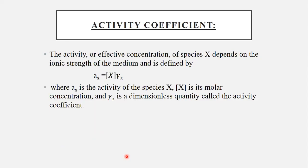Activity coefficient. The activity or the effective concentration of a species X depends on the ion strength of the medium and is defined by a_x = [X]γ_x, where a_x is the activity of the species, [X] is its molar concentration, and γ_x is a dimensionless quantity called the activity coefficient.